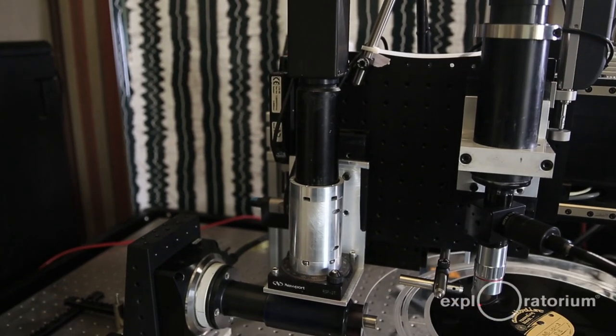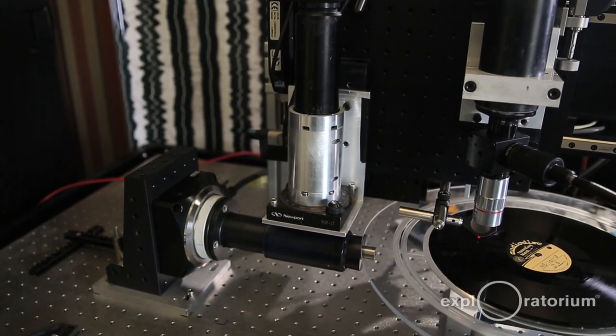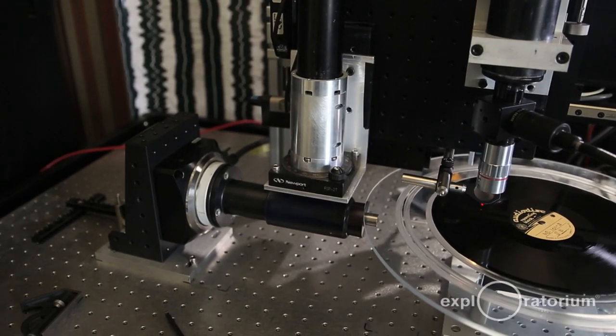In the case of the cylinder, where the sound is encoded in the third dimension, we use this device, which is called the confocal microscope. And it creates an image of the entire surface that's like a topographic image.